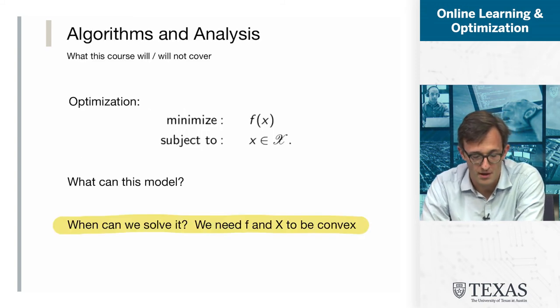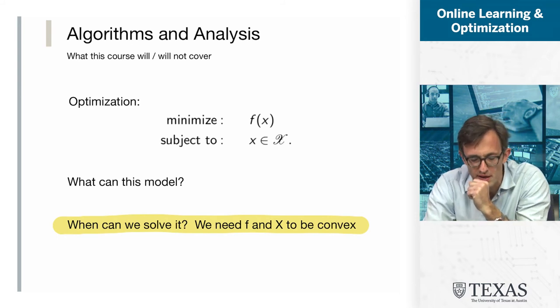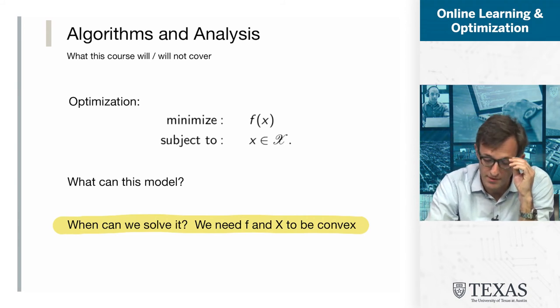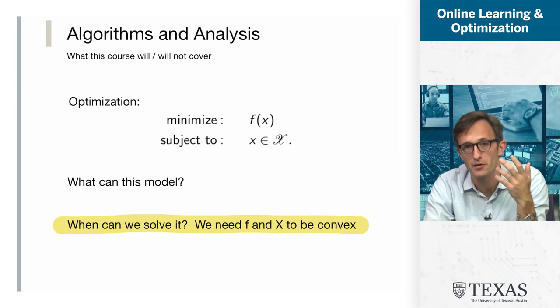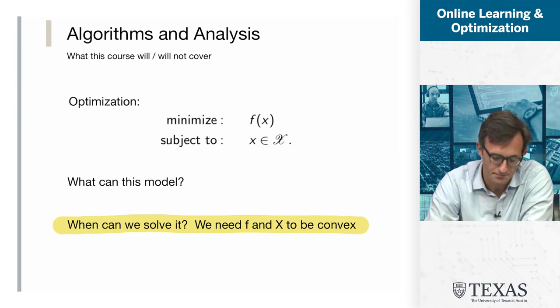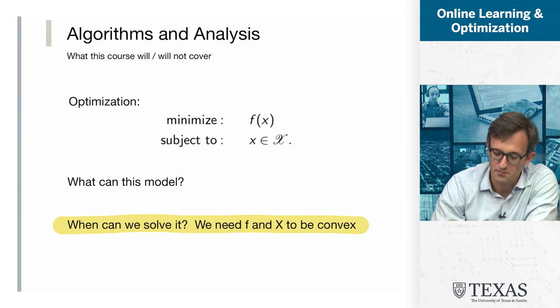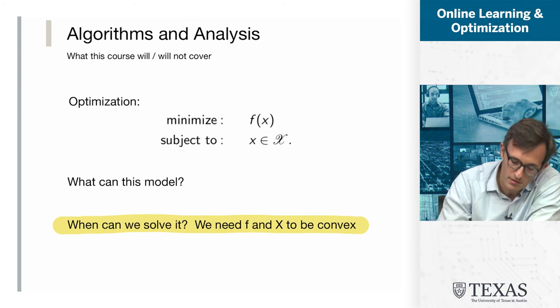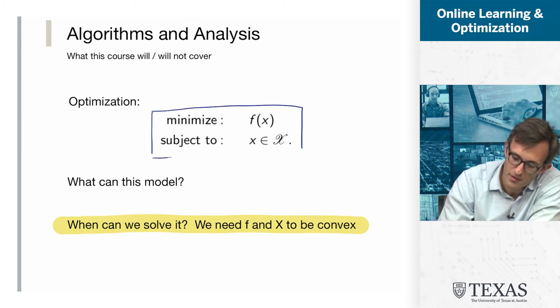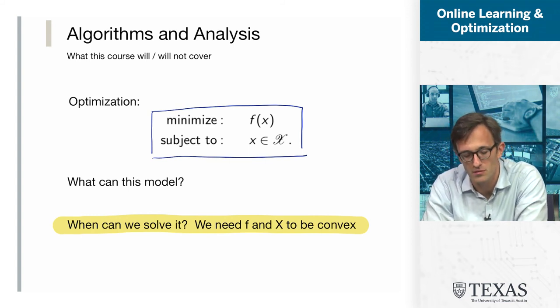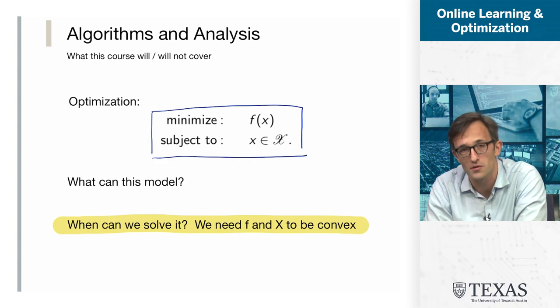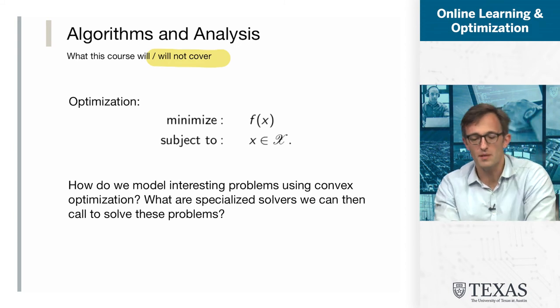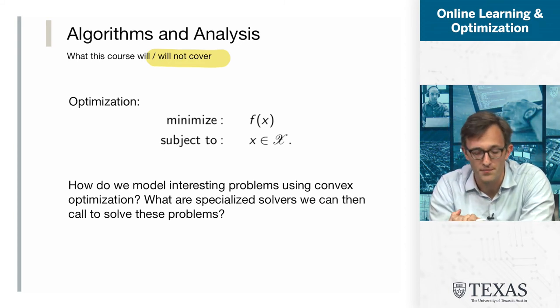So we need to move on to the second question. Now we've seen a little bit about what can this model, but we also need to be able to solve these problems. If this is of any use, it's not very useful to be able to model a rich class of problems if we can't say anything about them. So I need to ask: when can I solve this problem? And the answer that we're going to focus on in this class is we'll be able to solve our main objective here when a function f has a property called convexity—when f is convex, we'll define that later—and also when the set X is also convex.